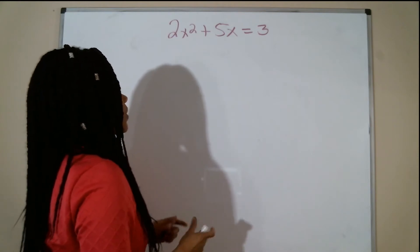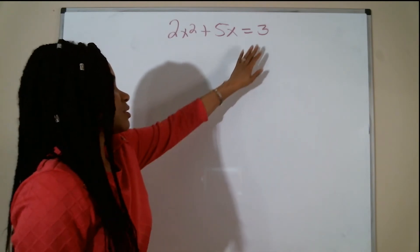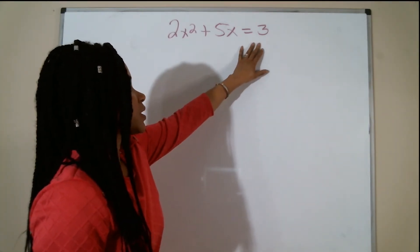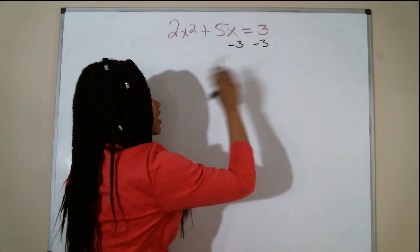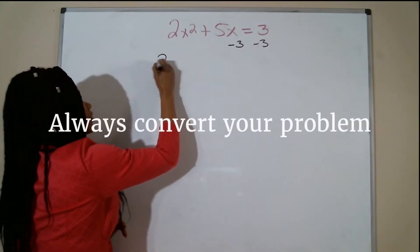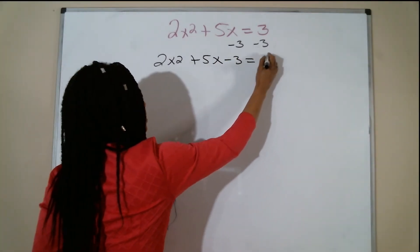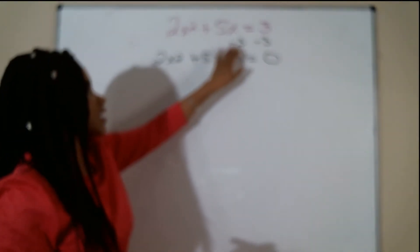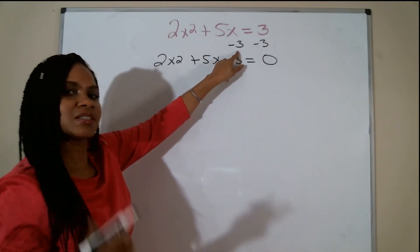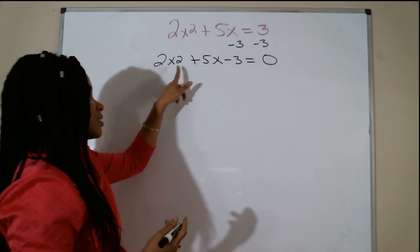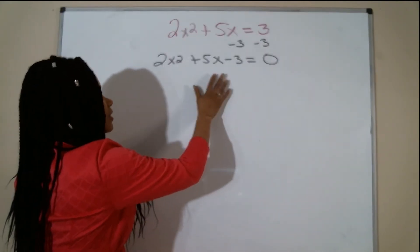The first thing you want to always do is make sure all of your terms are on one side and your equation is set equal to zero. As you can see here, we have a positive three. To move it to the other side, I'm going to subtract it using inverse operations. I'm left with 2x squared plus 5x minus 3 equals zero. I could not combine that negative three with anything over here because it is not a like term.